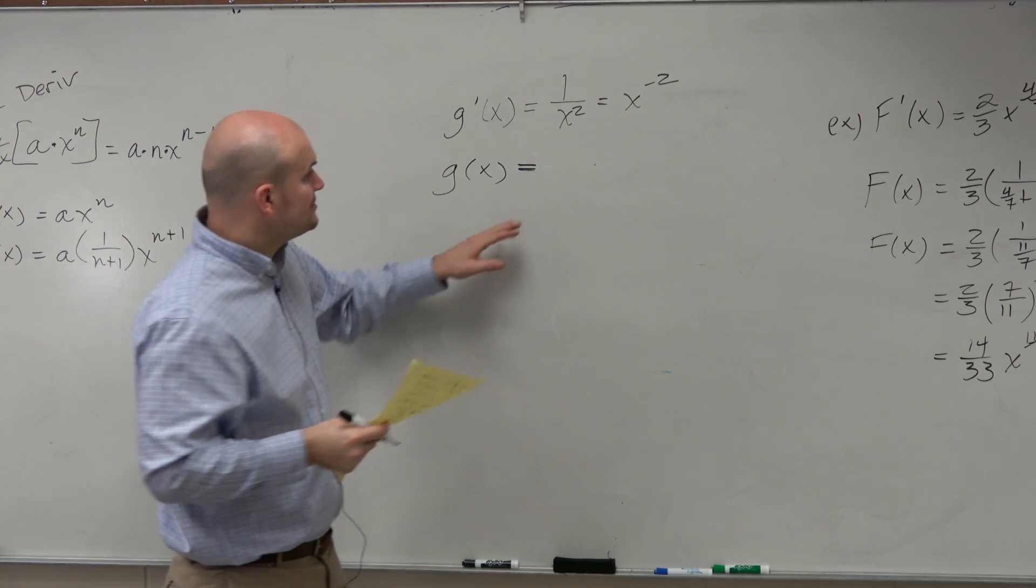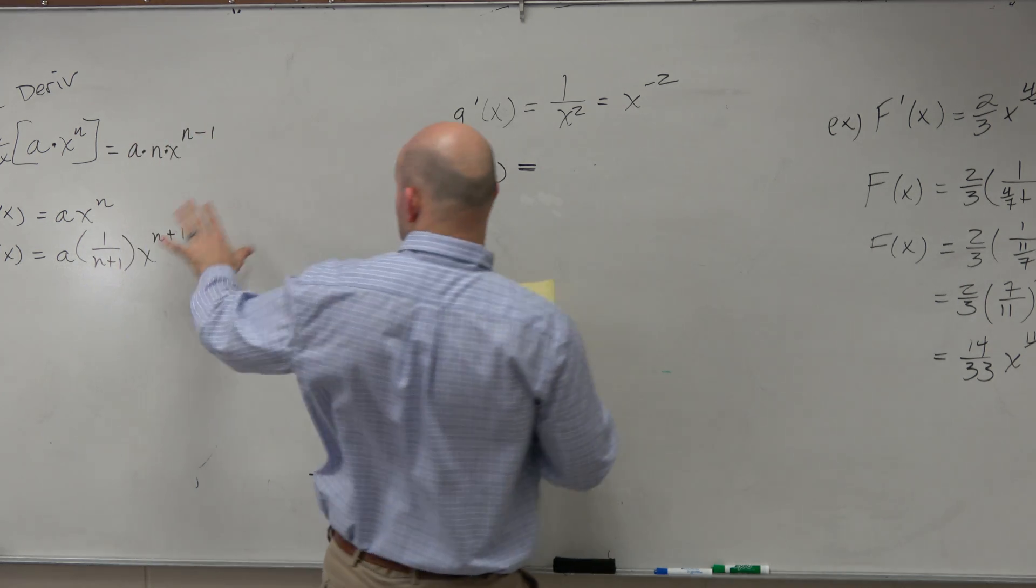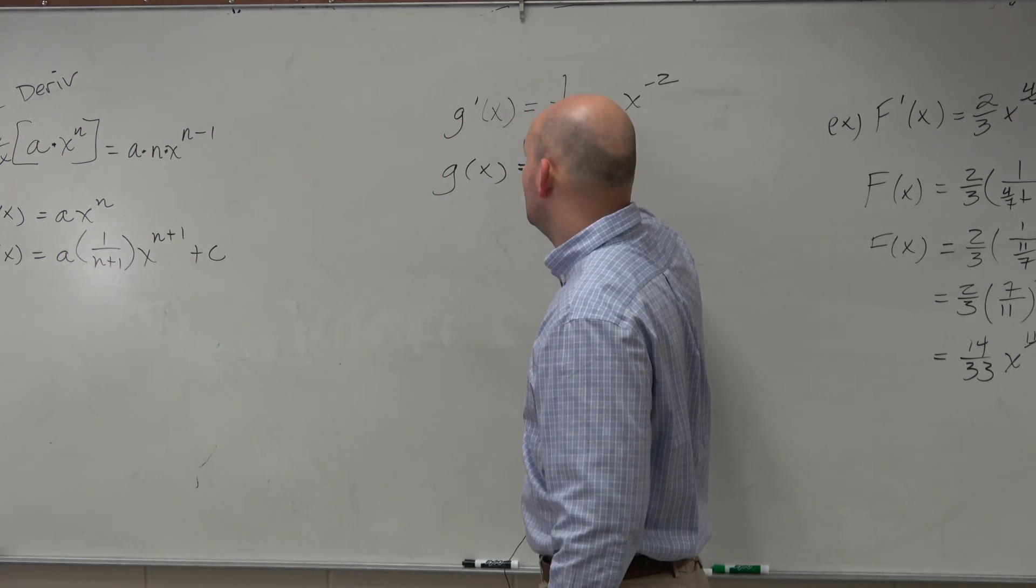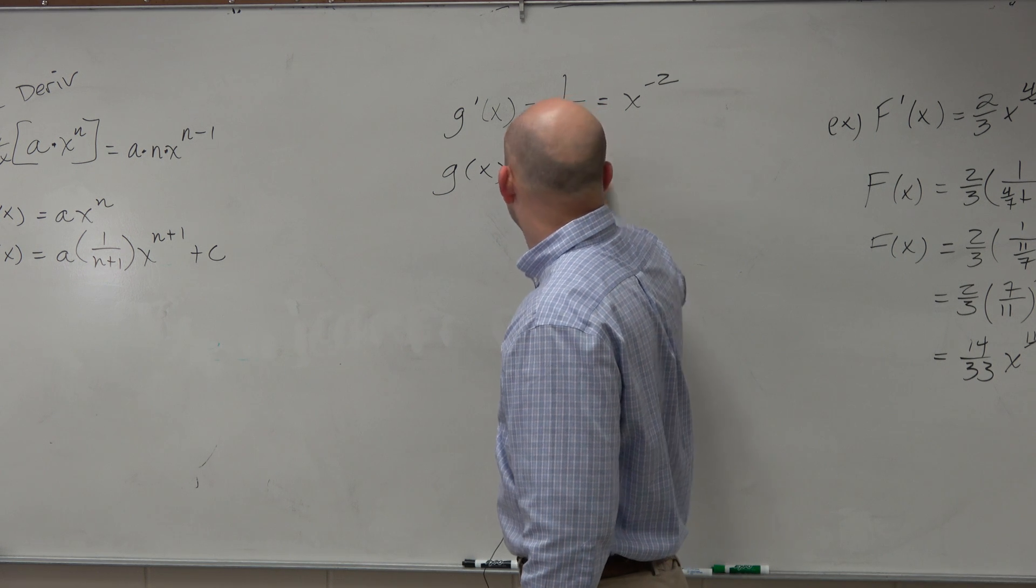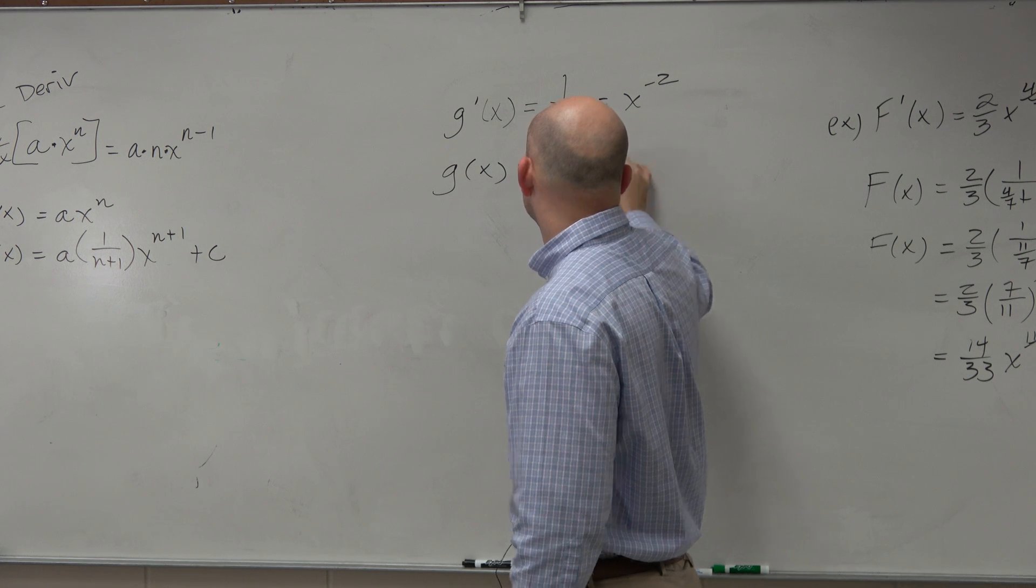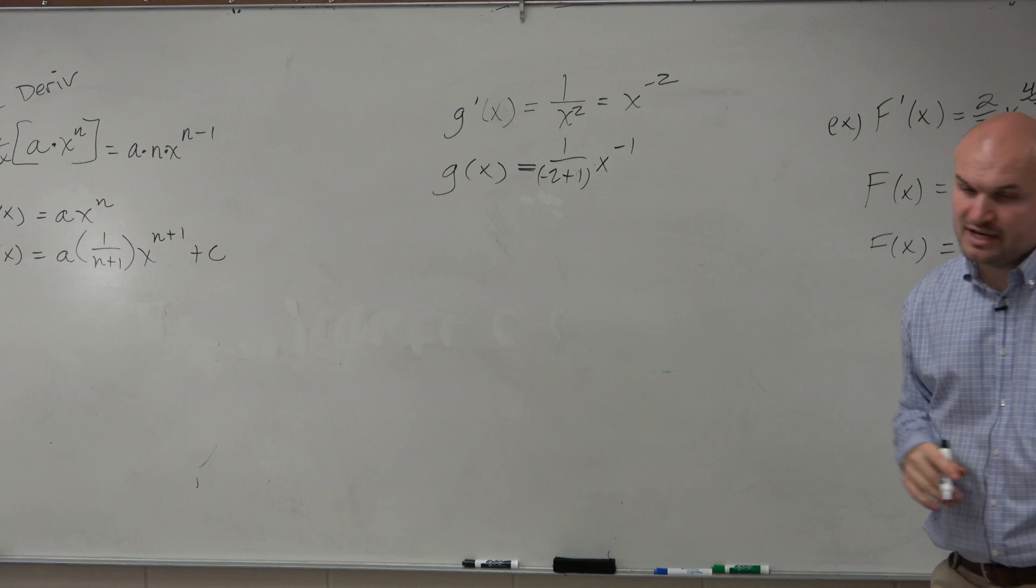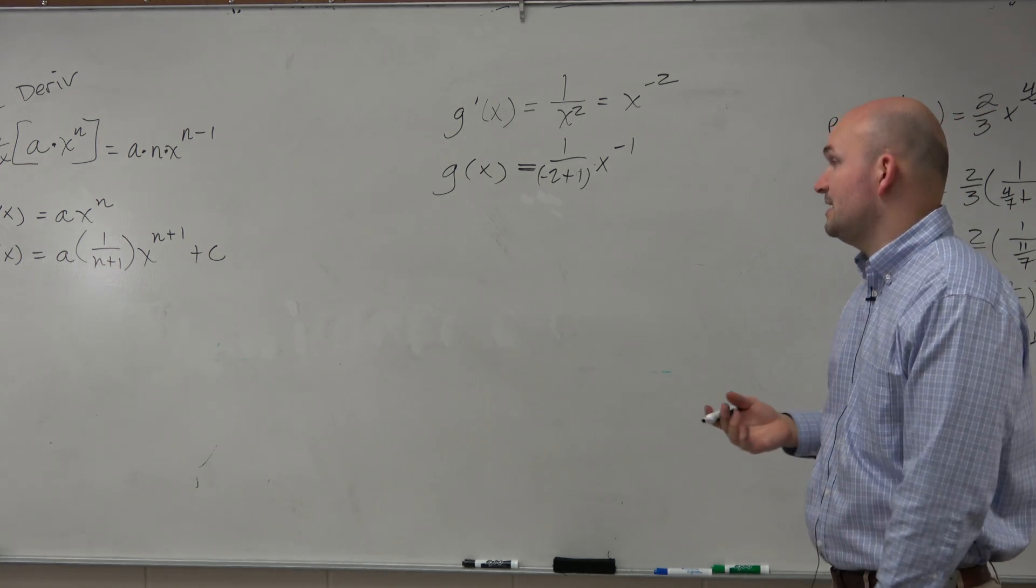So anyways, just kind of following our rule in this case, if you're looking at this, again following that same process that we have, our n is negative 2, and obviously negative 2 plus 1 is going to be a negative 1.